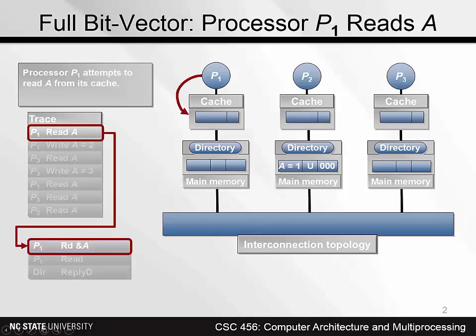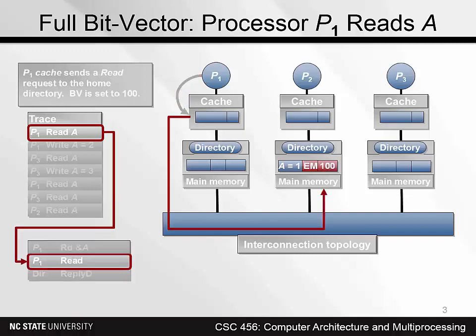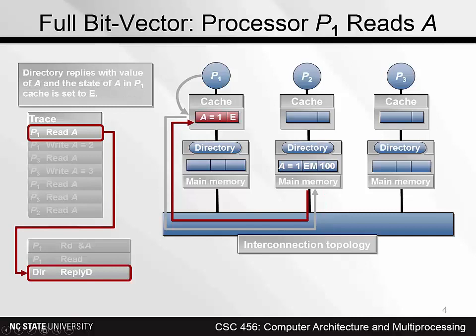The value of A is 1 in memory at node 2. The block containing A is in state U because it is not cached anywhere in the system, and the bitvector is all 0s. Processor P1 reads A, but A is not yet cached. P1's cache sends a read request to the home directory, which is at node 2. The directory state changes to EM, and the bitvector is set to 100, indicating that cache 1, and only cache 1, has a copy. Main memory responds with the block, and it is cached in P1's cache in state E.